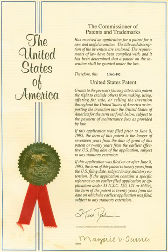Some countries have working provisions that require the invention be exploited in the jurisdiction it covers. Consequences of not working an invention vary from one country to another, ranging from revocation of the patent rights to the awarding of a compulsory license by the courts to a party wishing to exploit a patented invention. The patentee has the opportunity to challenge the revocation or license, but is usually required to provide evidence that the reasonable requirements of the public have been met by the working of the invention.